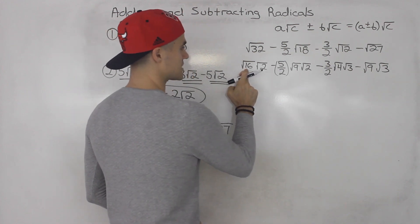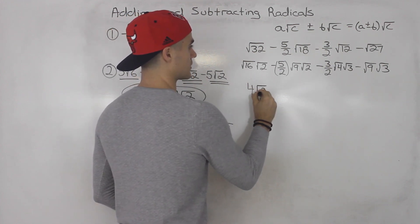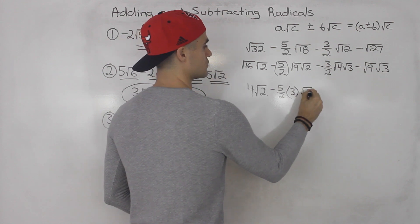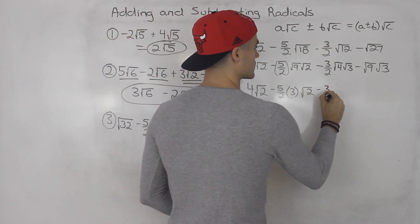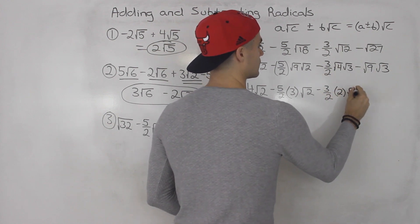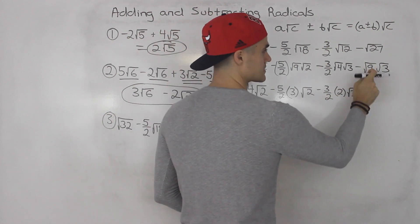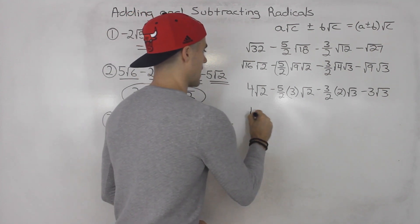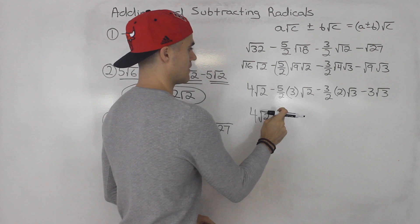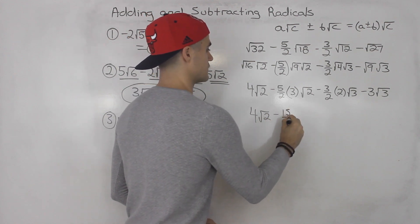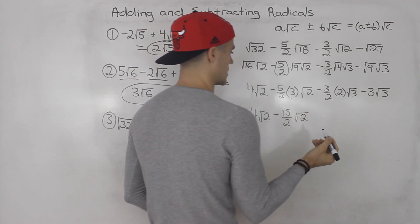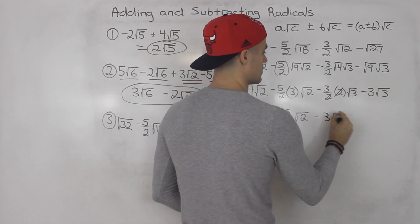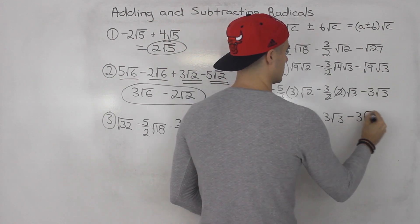So what's going to happen here: root 16 is 4, root 2 can't simplify further. Then we have minus 5 over 2, and root 9 is 3, root 2 stays as is. Then minus 3 over 2: root 4 is 2, root 3 can't simplify further. And root 9 is 3, root 3 can't simplify further. So now we have 4 root 2. Then 5 over 2 times 3 gives us 15 over 2, with a minus — so minus 15 over 2 root 2. And then 3 over 2 times 2, the 2's cancel, leaving minus 3 root 3. And this is also minus 3 root 3.